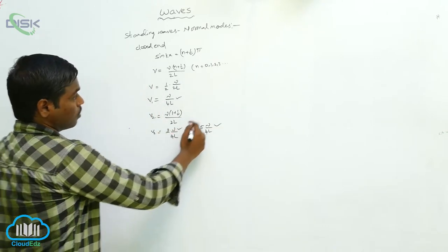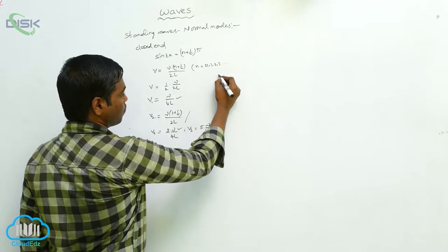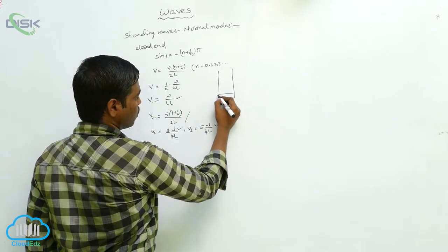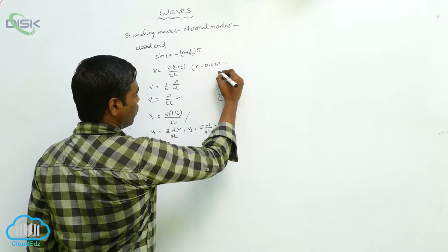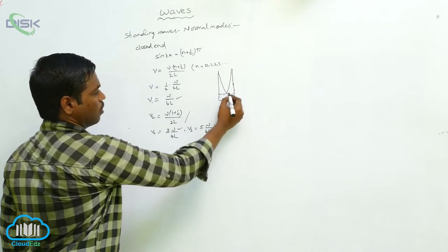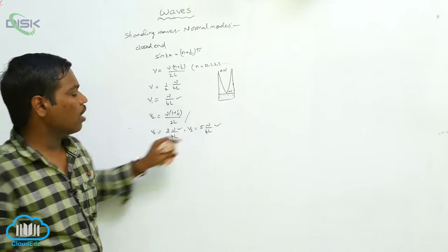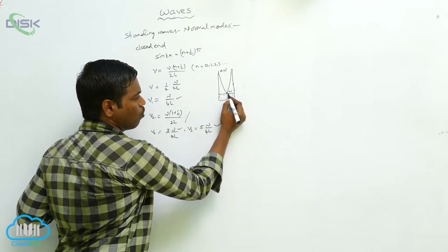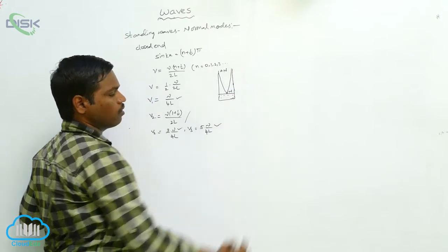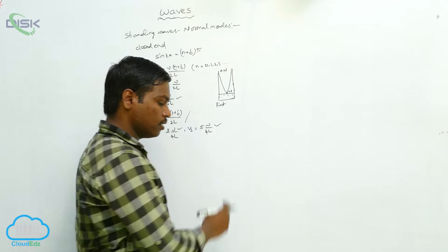For the closed end, consider a vessel filled with water up to a certain level — we get standing waves like this. This is the node and this is the anti-node. At the closed end, where the water is touching, we always get a node, and on the other side we get an anti-node. This is the first harmonic.